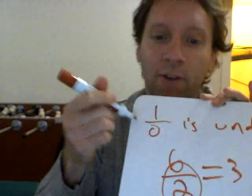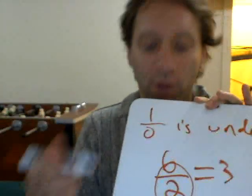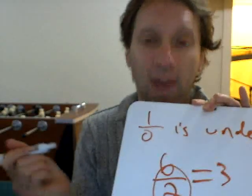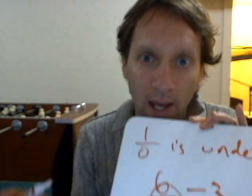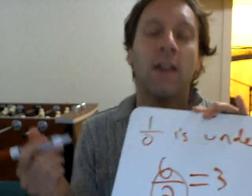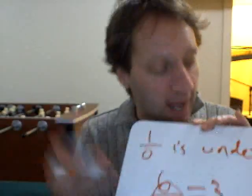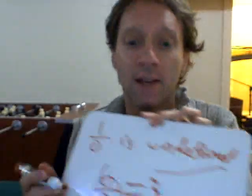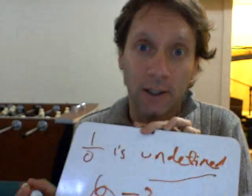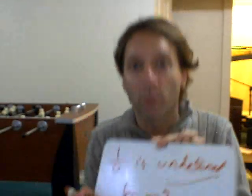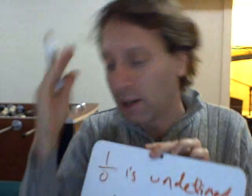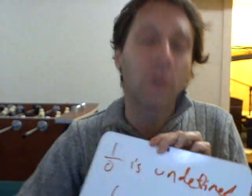So now the answer to 1 over 0 is simple. The question becomes: 0 times what is 1? And the answer is nothing — 0 times anything is 0. Hence, it's undefined, because there is no answer. It's not some arbitrary rule, it's not some crazy thing mathematicians do to torture you. It's a fact.